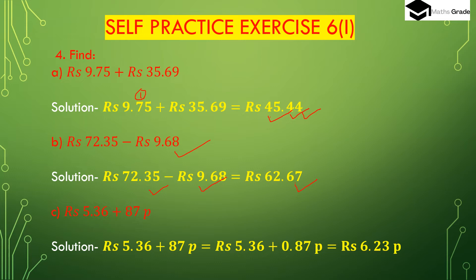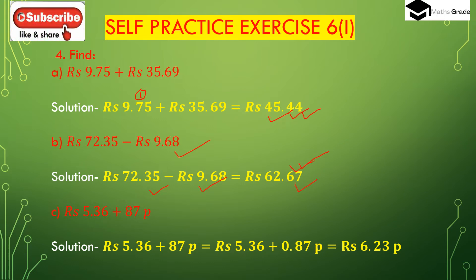As we took a carryover from the rupees part, this 5 becomes 15, 15 minus 8 is 7, and this 3 becomes 2, 12 minus 6 is 6, confirming 67 paise. Now since we took 1 rupee from the rupees part, 72 rupees becomes 71 rupees. 71 rupees minus 9 rupees is 62 rupees. So the answer is 62 rupees 67 paise.